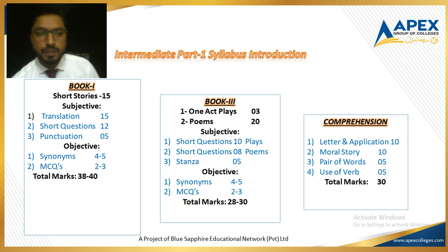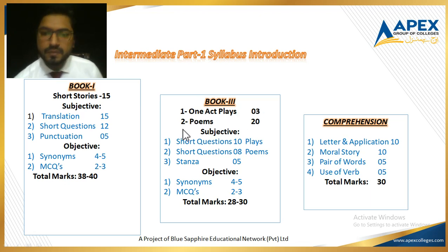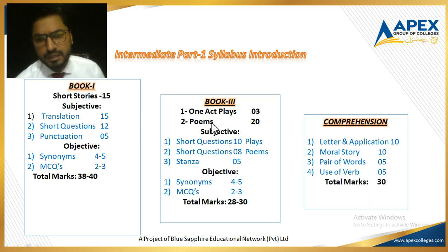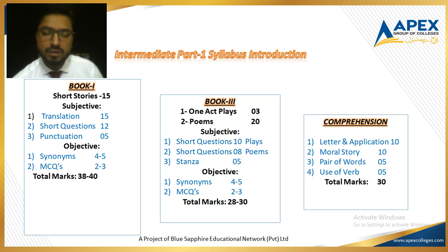The second book is Book 3, and it consists of two major parts. The first part comprises one-act plays, which are three in number. The second part is poetry, and you will prepare 20 poems. Don't be afraid that you will have to prepare 20 summaries as you did in matriculation — in matriculation you only prepared two or three summaries. Here there are no summaries at all.